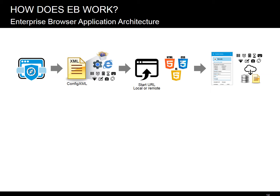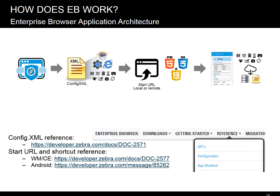You get to choose whether to include all or just some of them. The links below will take you directly to references on what can be configured in config.xml, and how to create shortcuts that directly launch different apps on the same WM, CE, or Android device.